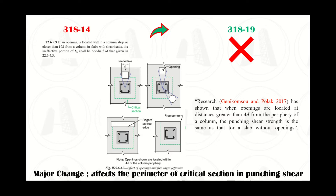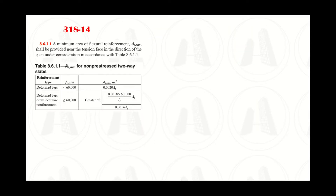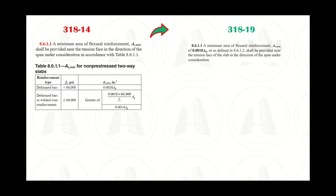The minimum area of flexural reinforcement is no longer dependent on the yield strength of rebars in the 2019 version of the code. Hence, table 8.6.1.1 is no longer there. You are now required to provide 0.0018 times the gross area as the minimum area of flexural reinforcement in two-way slabs.